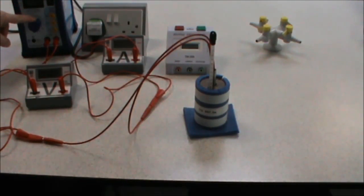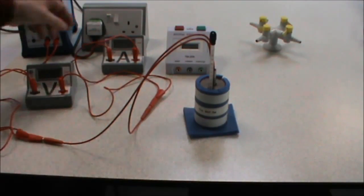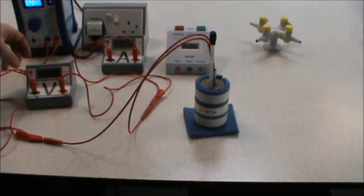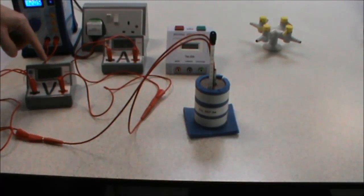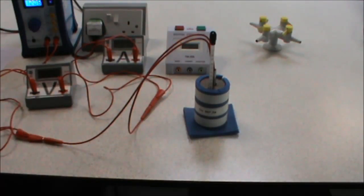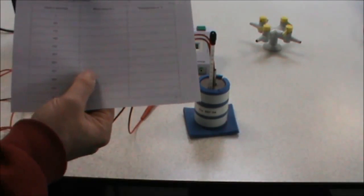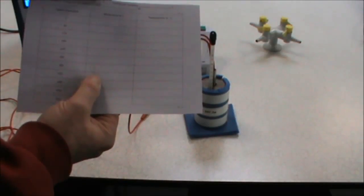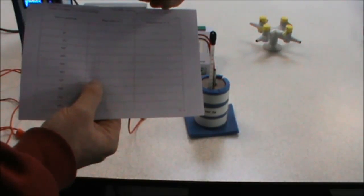We make sure that the power supply is set to 12 volts. We turn on the power supply. Turn on our ammeter and voltmeter and record the readings of the voltage and the current at the top of our results table. The ammeter reading goes here, voltmeter reading goes here.